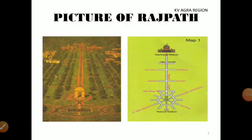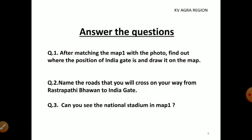You are now watching an image of Rajpath along with its map. Just observe these two pictures. All the important monuments, roads, and natural resources are mentioned in the map. Try to find the road on the actual image by looking at its location on the map. Are you able to trace it? Let us try to understand the concept more with the help of a few questions.